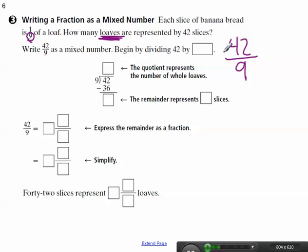And I also know that when I see a number written like this as a fraction, that this also means divide. So 42 ninths. So I'm basically going to do a division problem to solve this. So how many times does 9 go into 42? Well, I know that 9 times 4 is 36.